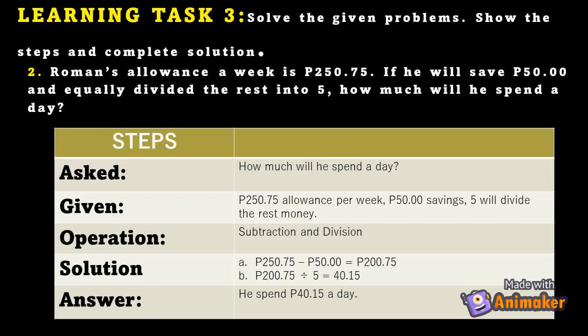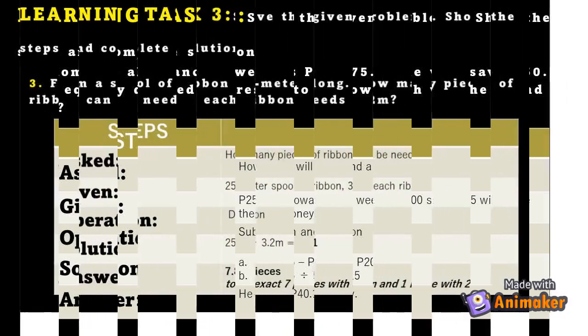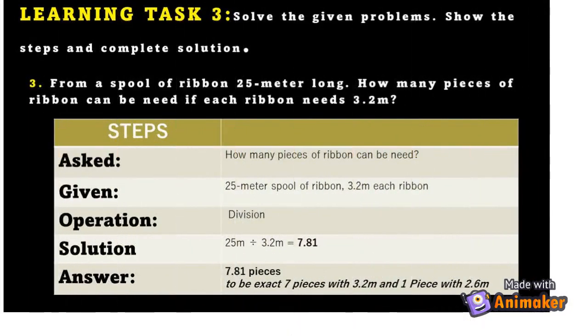Number 3: From a spool of ribbon 25 meters long, how many pieces of ribbon can be cut if each piece needs 3.2 meters?